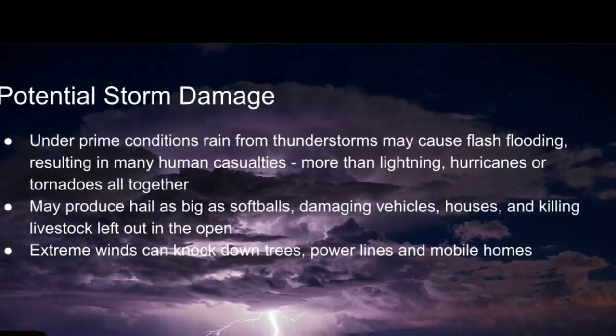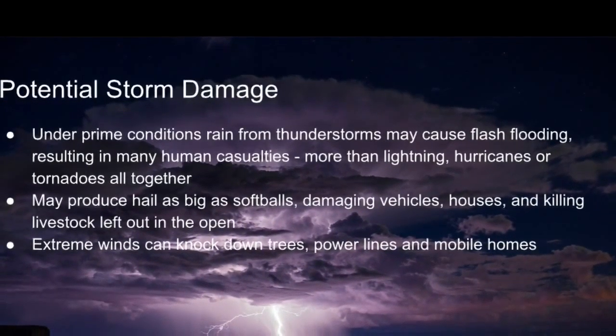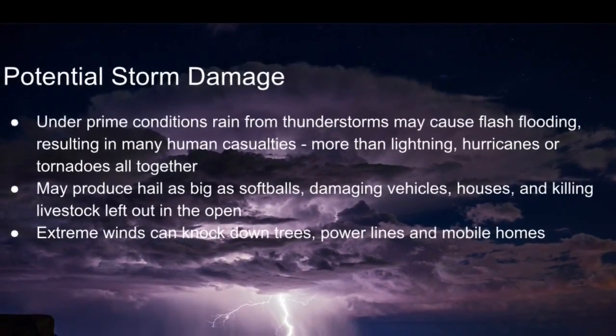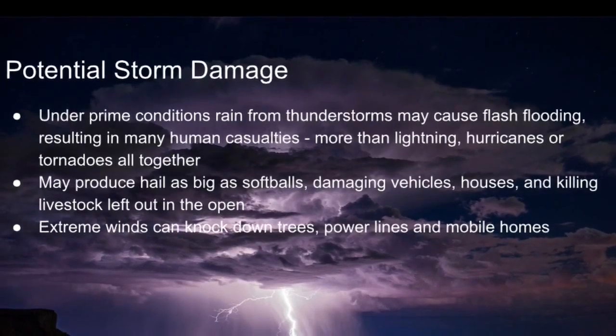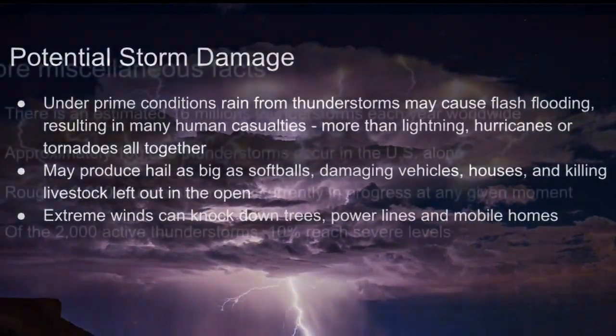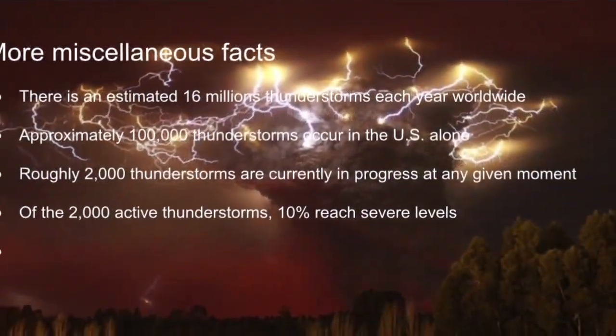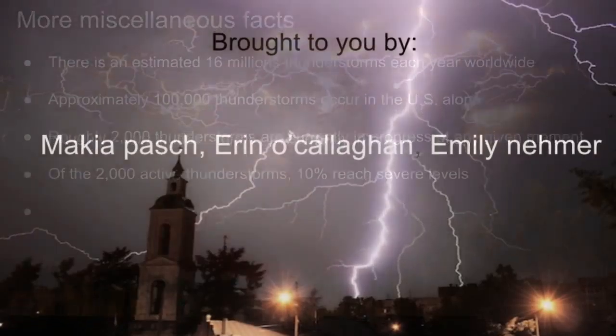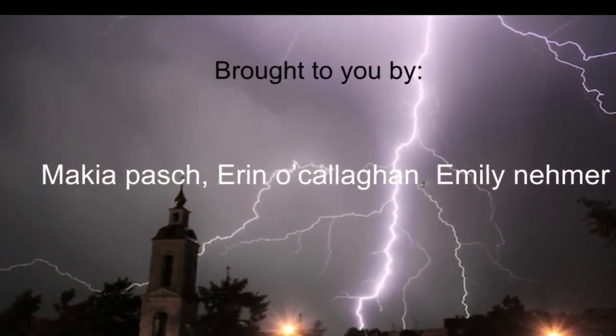Under primed conditions, rain from thunderstorms may cause flash flooding. And extreme winds can knock down trees, power lines, and mobile homes. Thank you for listening to our public service announcement.